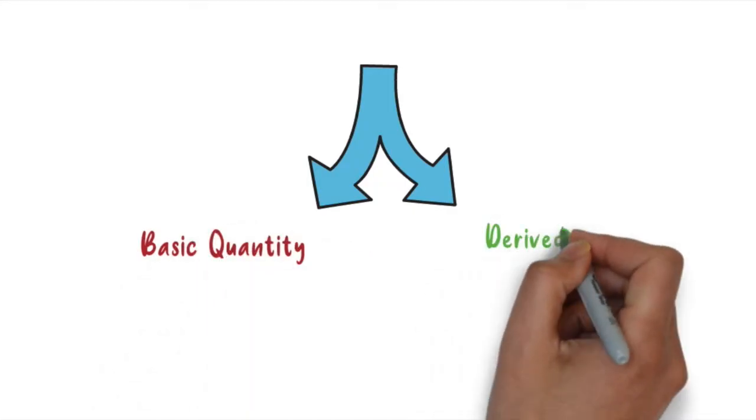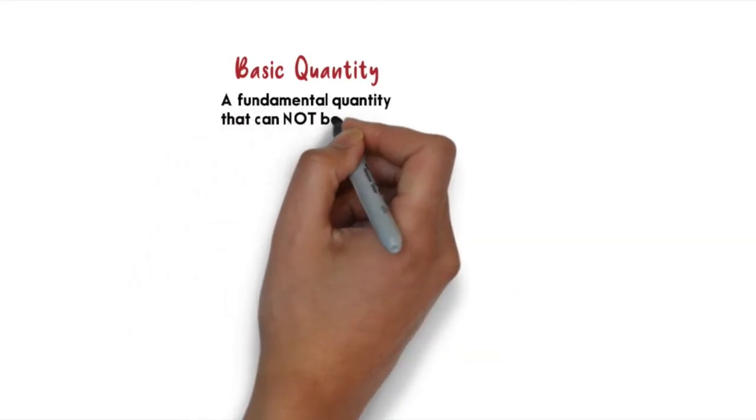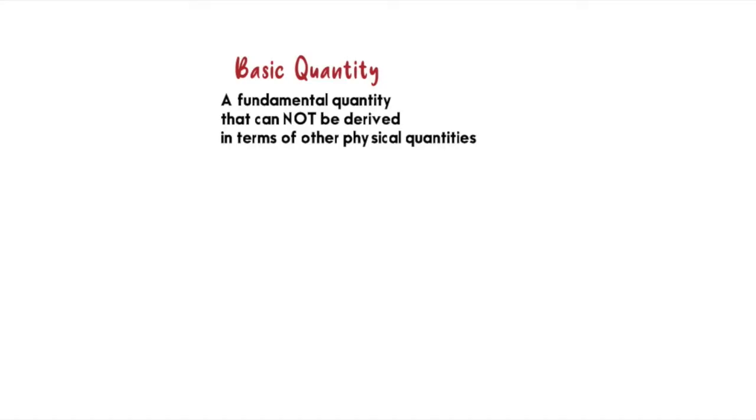It can be divided into two types. The first one is basic quantity and the second one is derived quantity. So what is basic quantity? Basic quantity is a fundamental quantity that cannot be derived in terms of other physical quantities.